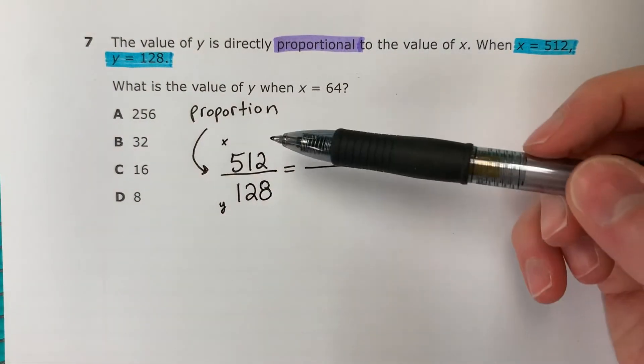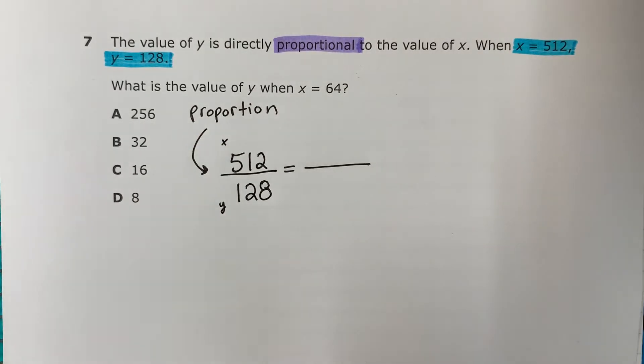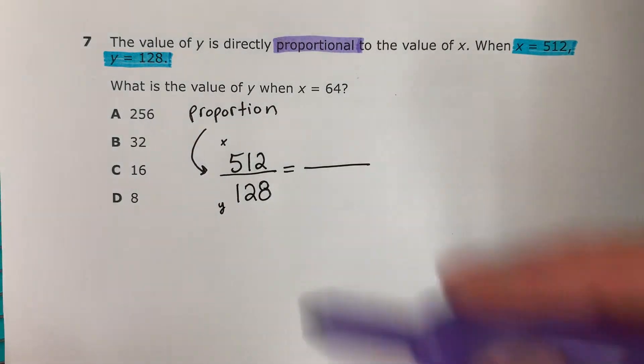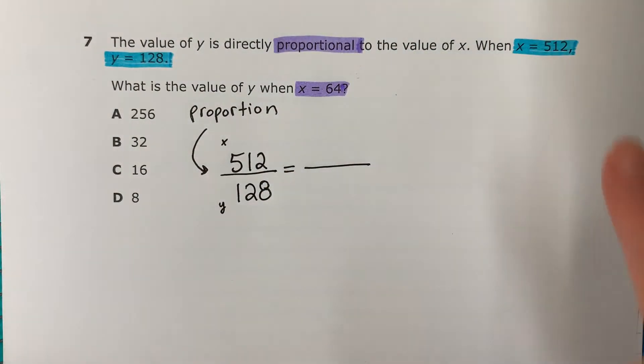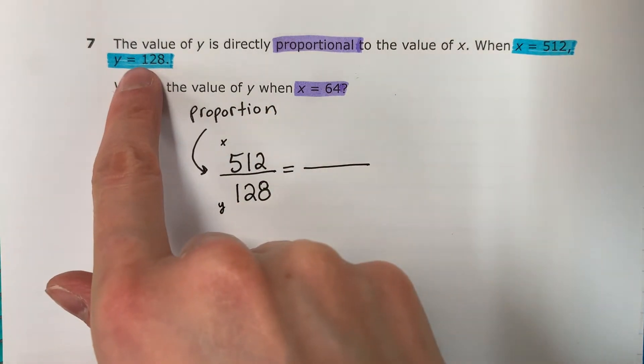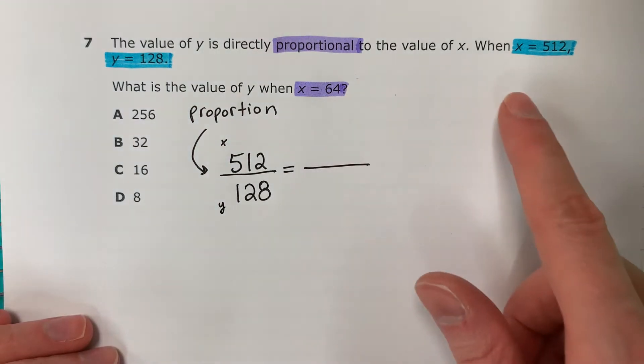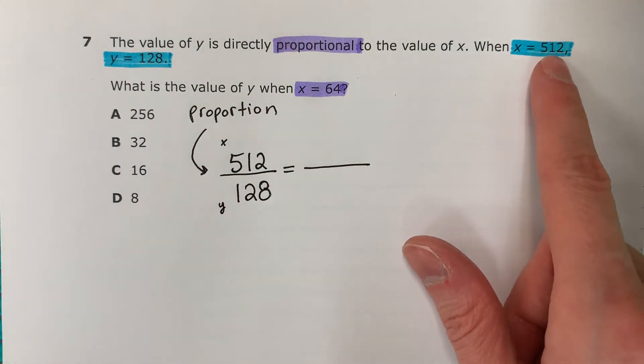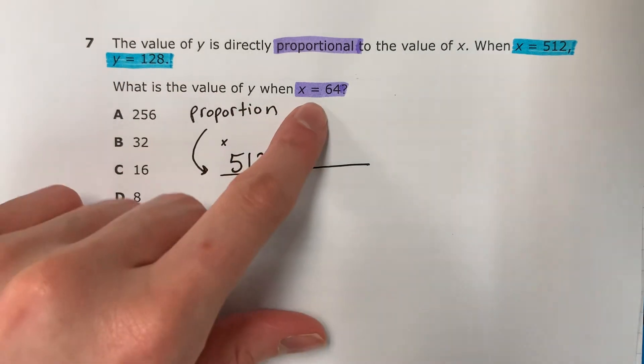So these are together, están juntos. Now I have another number. Tengo otro número. X is 64. So if when X is 512, Y is 128, then what happens when X is 64? Si X es este número, y la Y es este número, ¿qué pasa cuando X es 64?